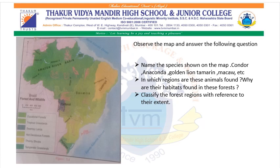Now, classify the forest regions with reference to their extent. Evergreen rainforests are found in Guyana Highland and the Amazon River Basin. Deciduous forests and savanna-type forests are found in the Paraguay-Parana River Basin, Brazilian Highland, and the central part of Brazil. Swampy lands are found in the Pantanal region. Thorny shrub-type vegetation is found in the drought-prone Catinga area in the northeastern region of Brazil.